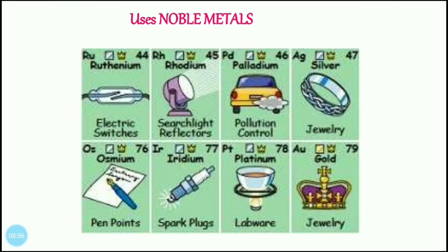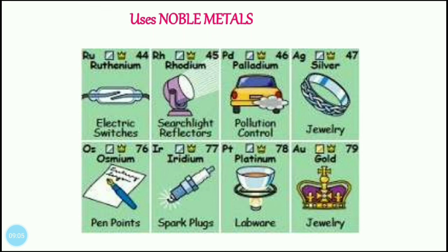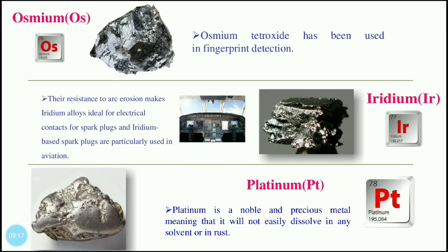Today we covered the main uses of ruthenium, rhodium, palladium, silver, osmium, iridium, platinum, and gold. These are the eight noble metals — their uses, their positions in the periodic table, and their atomic symbols.